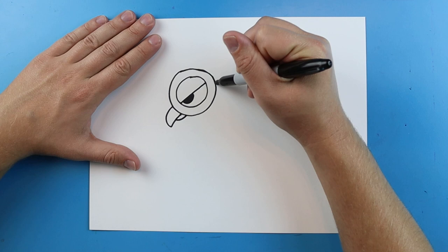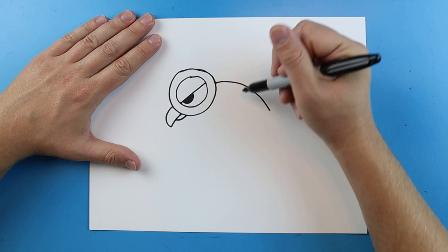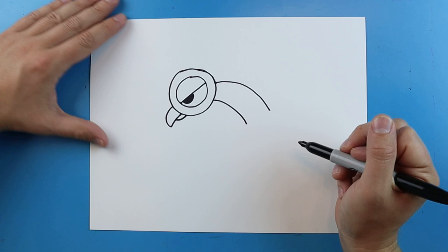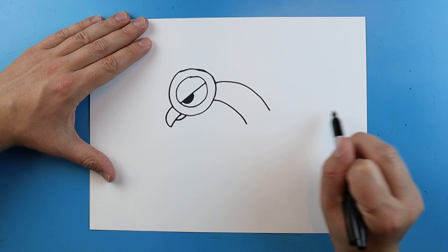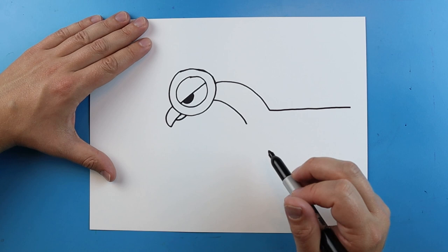Now starting here, kind of lined up with the eye, you just want to draw a line that curves down like this. And then we're going to make another one that curves down right here. We're going to make a straight line that goes across, so just draw your straight line.